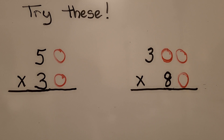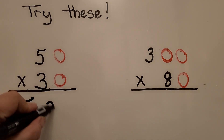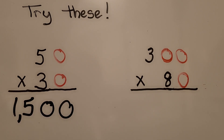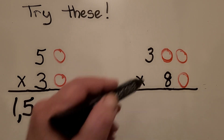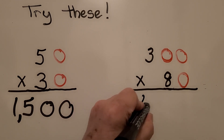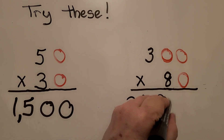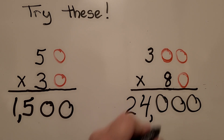Let's see if you can quickly do these in your head. Do you know 50 times 30 — what the product would be? If you thought 5 times 3 is 15 and we have two zeros, so the product is 1,500 — you got it correct. What about 300 times 80? 3 times 8 is 24 and we have three zeros. If you found that it was 24,000, you got it right.